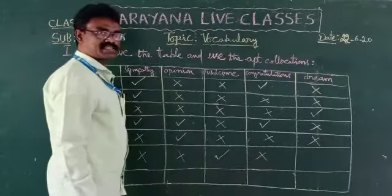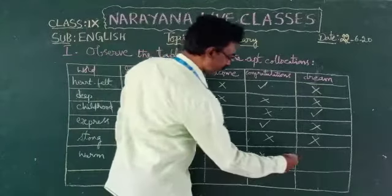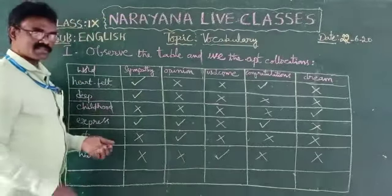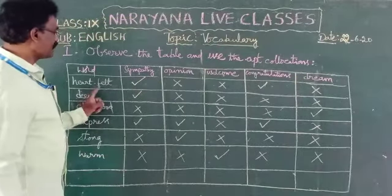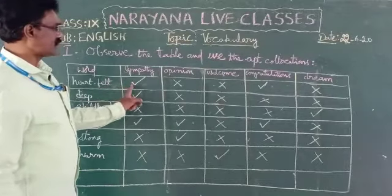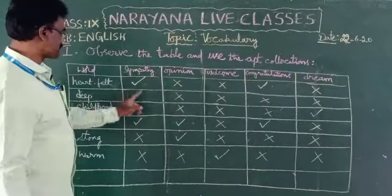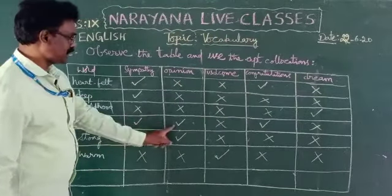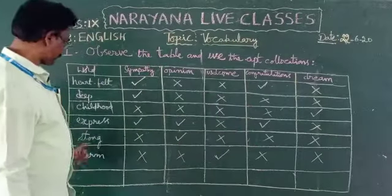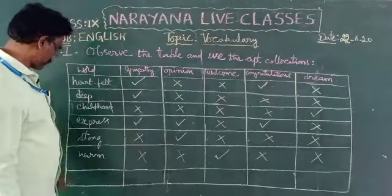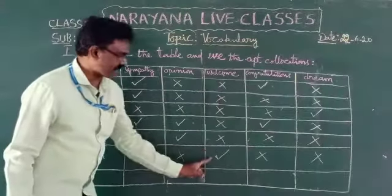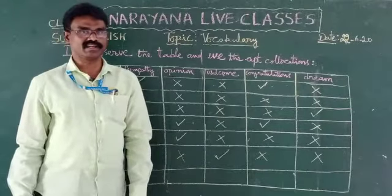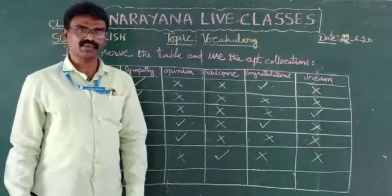Let me remind you of all the correct collocations once again: heartfelt sympathy, heartfelt congratulations, deep sympathy, childhood dream, express sympathy, express opinion, express congratulations, strong opinion, warm welcome. Concentrate on these right collocations. I hope you got this — thank you, all the best.